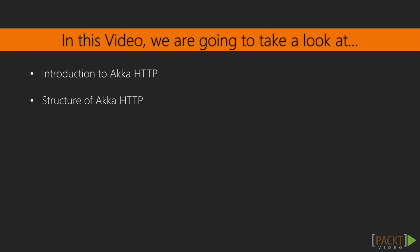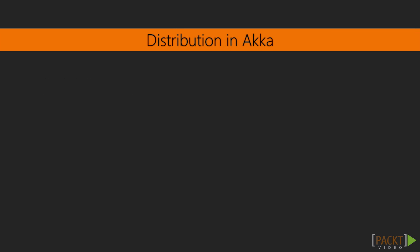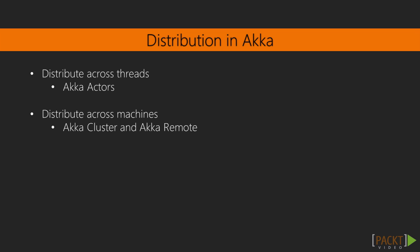We'll look at how the HTTP module fits into the Akka ecosystem, and then we'll see which modules it itself is composed of. Akka is a toolkit for building highly concurrent and distributed applications. When you think about distribution, you think about how to integrate the stuff that we've just distributed. If you want to distribute your application across threads, Akka gives you actors. And when you want to distribute your application across machines, Akka gives you Akka Cluster and Akka Remoting. When your application wants to interact with external services, Akka gives you Akka HTTP, since HTTP is the de facto standard of many web-based applications.